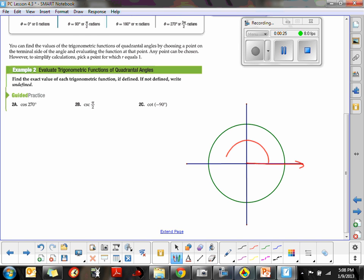We're going to rotate 270 degrees. 270 degrees puts us on the y-axis, and this is our terminal side. Any time we work with quadrantal angles, we want to go back to a unit circle and make sure we're using a radius of 1. That makes this as easy as possible.